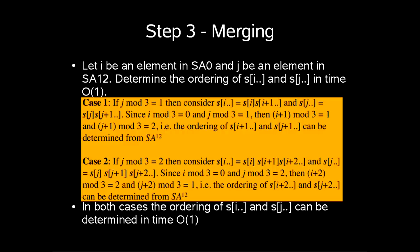To be a little more specific let i be an element in SA0 and J be an element in SA1-2. We can always determine the ordering of SI and SJ in constant time. We have two cases. The first is that J mod 3 equals 1. Then consider S of i equals S of i followed by SI plus 1 and SJ be SJ followed by SJ plus 1. Since i mod 3 is 0 and J mod 3 is 1 then I plus 1 mod 3 is 1 and J plus 1 mod 3 is 2. So the ordering of these two is already determined in SA1-2.